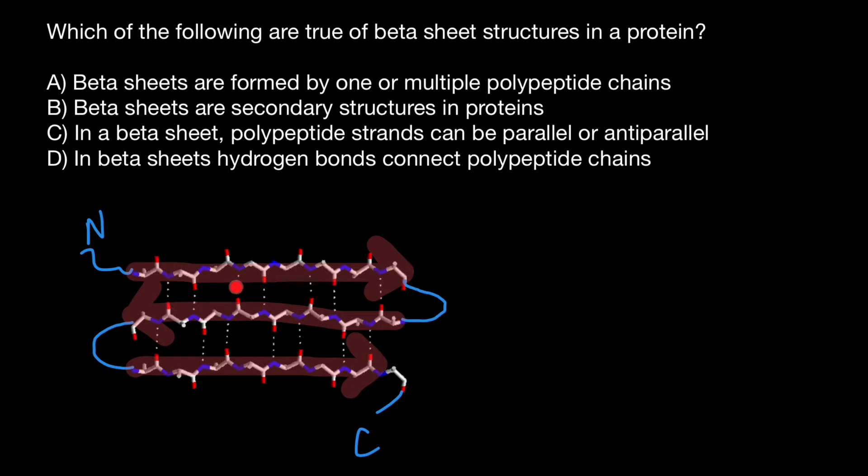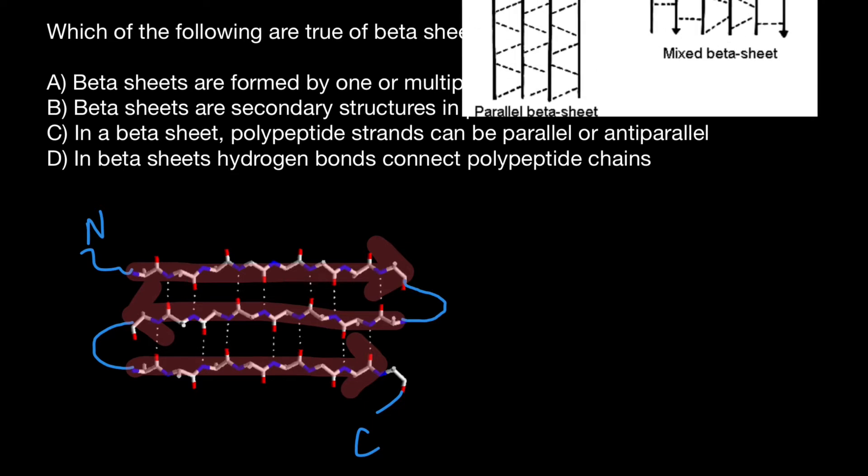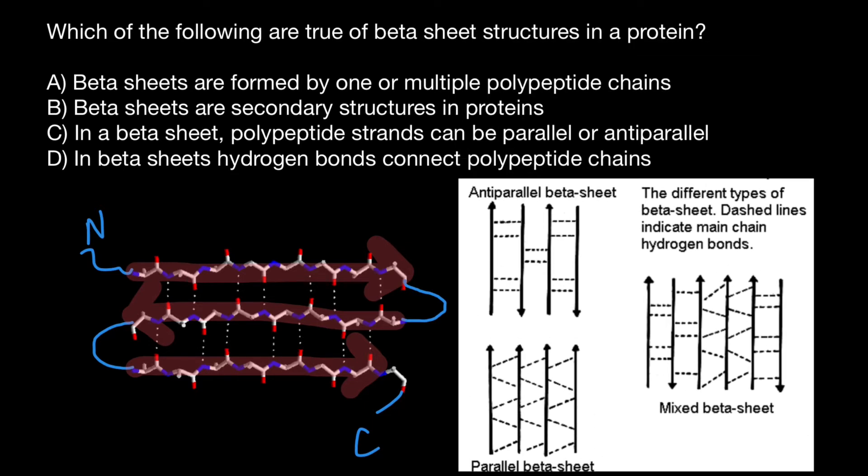But what helped me to recognize that this is anti-parallel structure? Actually, this hydrogen bonds. The pattern tells me whether it is anti-parallel or parallel. Take a look at another picture where you can see two variants of the hydrogen bonding in anti-parallel beta sheet and parallel beta sheet and a mixture of both.